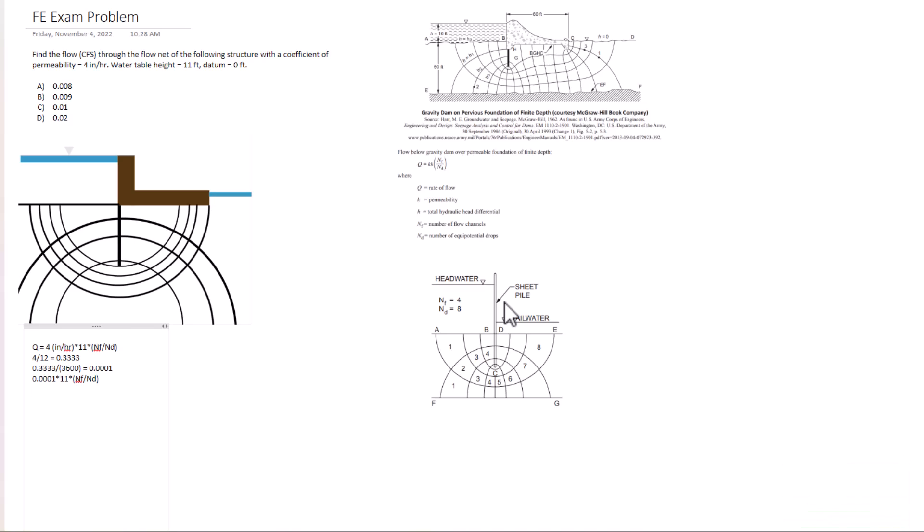I don't know if you get that on your FE exam manual, but I just want to show you here for reference. Going this way is the nf value and then going this way is the number of drops. And so you can see you count here: one, two, three, four, five, six, seven, eight. And then the nf value is going this way down to the floor here, so one, two, three, four.